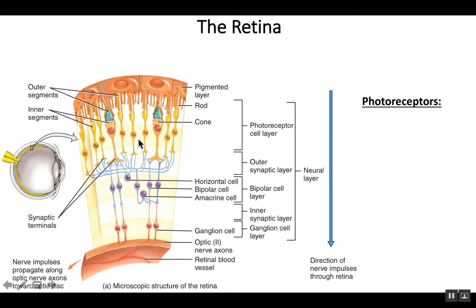Those light rays get captured, transferred into action potentials, and then transmitted back out, eventually leading to the ganglion cells that transmit those nerve impulses along the optic nerve. So light goes through a couple layers of neurons, gets captured, converted into action potentials, transmitted back out, and eventually reaches the optic nerve.